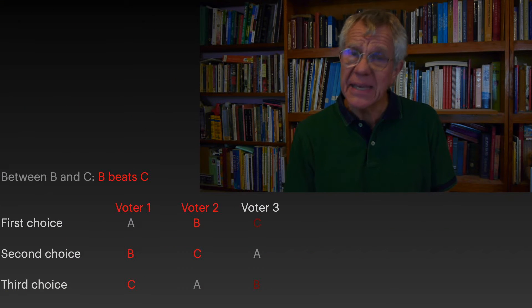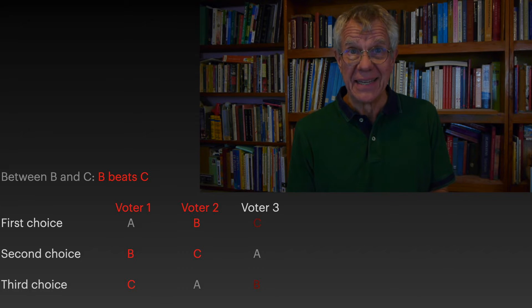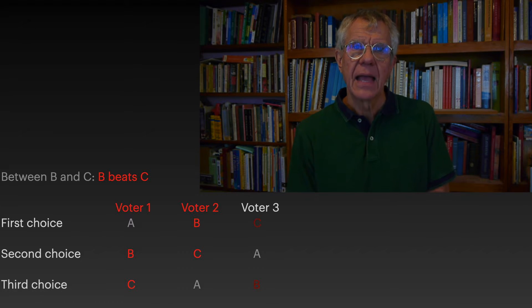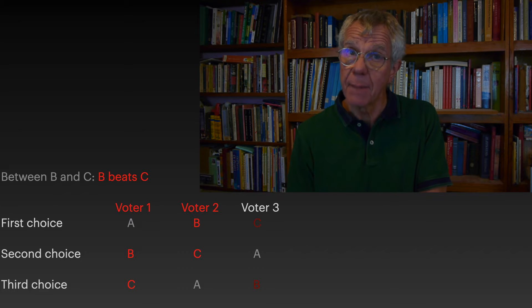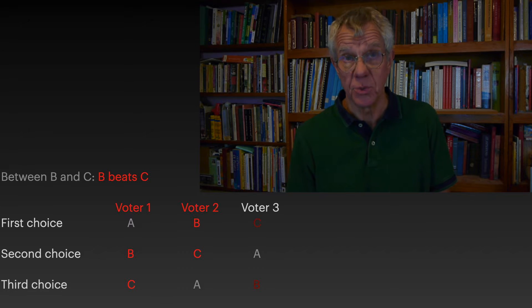Now let's take options B and C. Voter 1 prefers B and so votes B. Voter 2 prefers B — their first choice — so votes B. And only voter 3 has the opposite preference and votes for C. So B beats C, two to one.